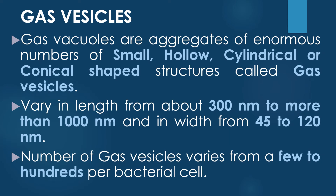Next, gas vesicles. The gas vacuoles are aggregates of an enormous number of small hollow cylindrical or conical shaped structures called gas vesicles. The gas vesicles vary in length and measure about 300 nanometers to more than 1000 nanometers in length, and their width is 45 to 120 nanometers. The number of gas vesicles present in the bacteria varies from a few to hundreds per bacterial cell.